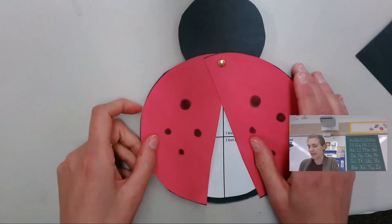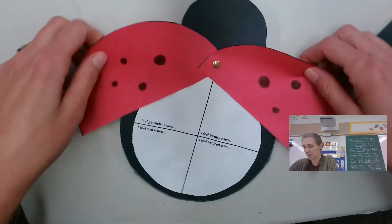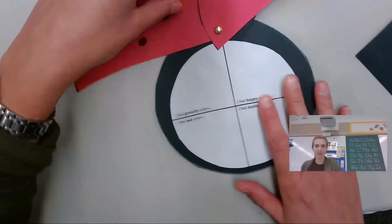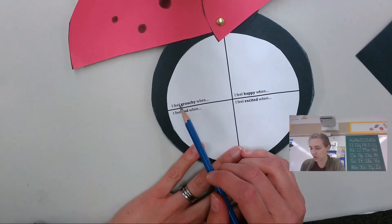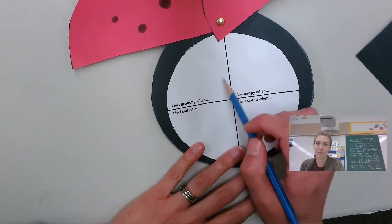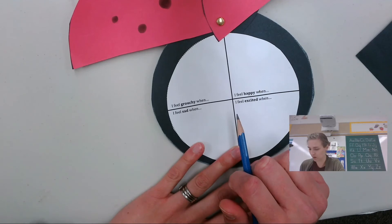Then what you're going to do is you're going to open it up all the way and we're going to get ready to draw some pictures. So I'll read the sentence and then what you're going to do is you're going to draw a picture of something that makes you feel that way.